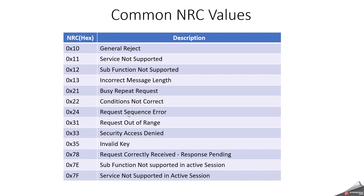NRC 24 means request sequence error. For example, in the routine control service (0x31), there are sub-functions 01 (start routine), 02 (stop routine), and 03. You must first start a routine before stopping it. If someone requests stop routine before starting it, the ECU will respond with NRC 24 — request sequence error.